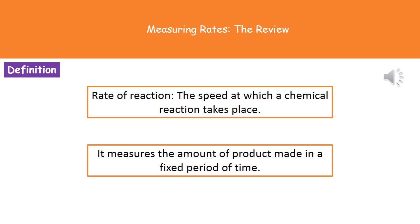So the first thing we actually need to understand is what exactly a rate of reaction is. Now if you're looking for the definition, quite simply, it's the speed at which a chemical reaction will take place. And what we're actually going to do to work that out is measuring the amount of product made in a fixed period of time.